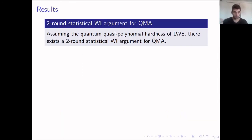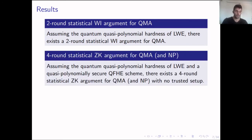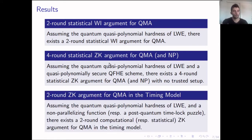We showed that this is not the case. Our results are: first, we constructed a two-round statistical witness indistinguishability argument for QMA. Using this, we were able to compile it into a full-fledged zero-knowledge argument in just four rounds, achieving statistical zero-knowledge. Finally, we also moved our research into the timing model, constructing two-round zero-knowledge arguments, both computational and statistical, depending on the assumptions. In this talk, I'll focus on the first two results.